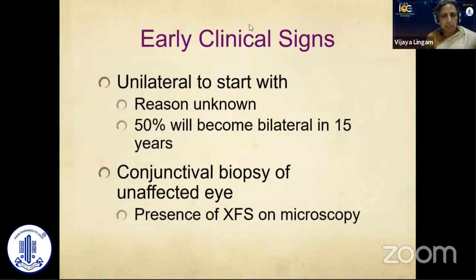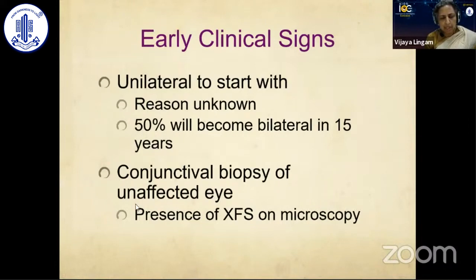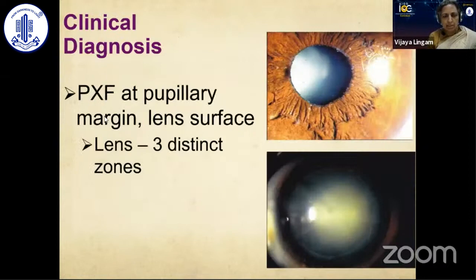Coming to the clinical picture and early clinical signs: it usually starts as unilateral, and 50% will become bilateral in 15 years. Even in unilateral cases, when the contralateral lens epithelial biopsy is examined microscopically, exfoliation material is found — so it is more of asymmetry than truly unilateral versus bilateral. It has a characteristic distribution: the exfoliation material is seen around the pupillary margin and the lens surface, which shows three distinct zones — a central disc, a clear ring of non-exfoliation, and a peripheral deposit.